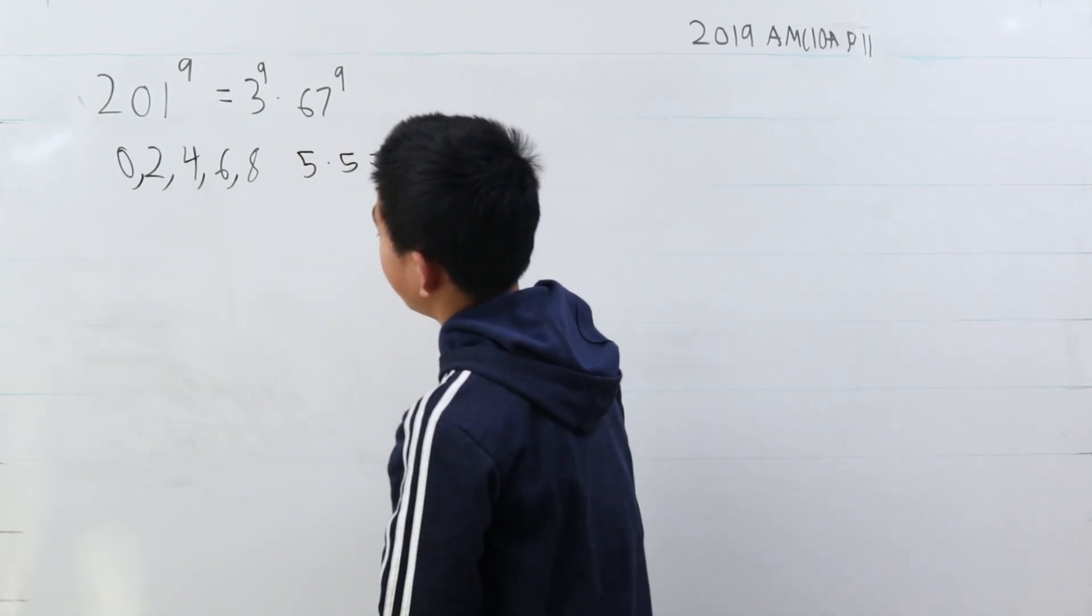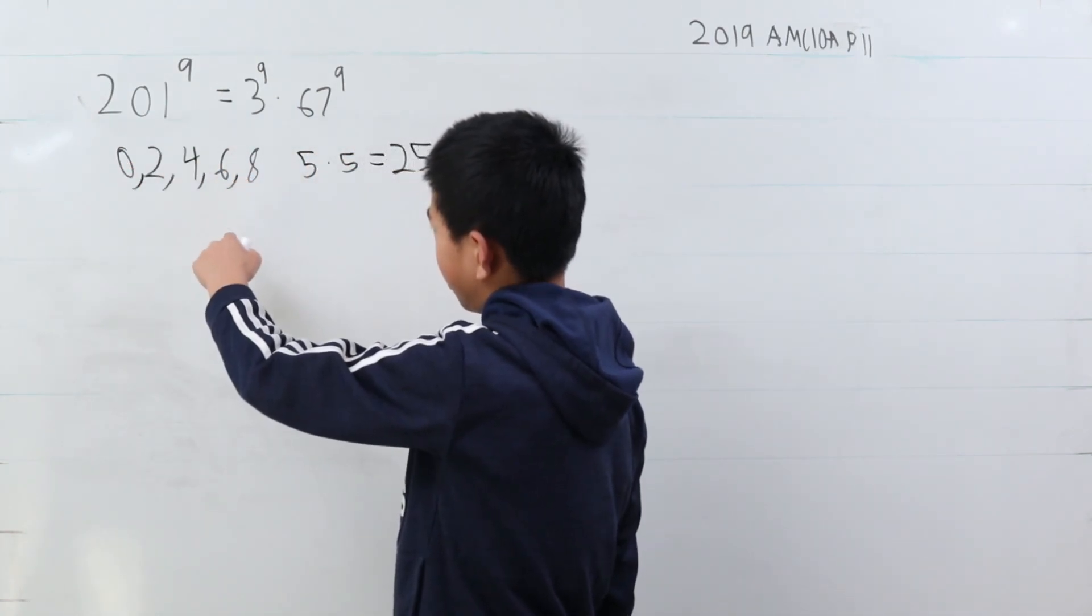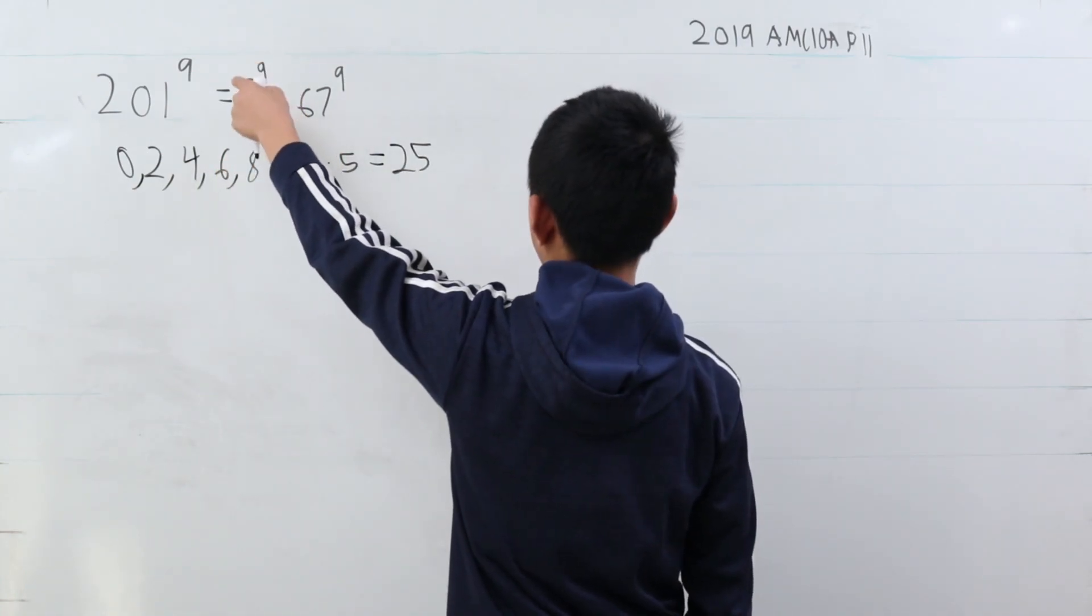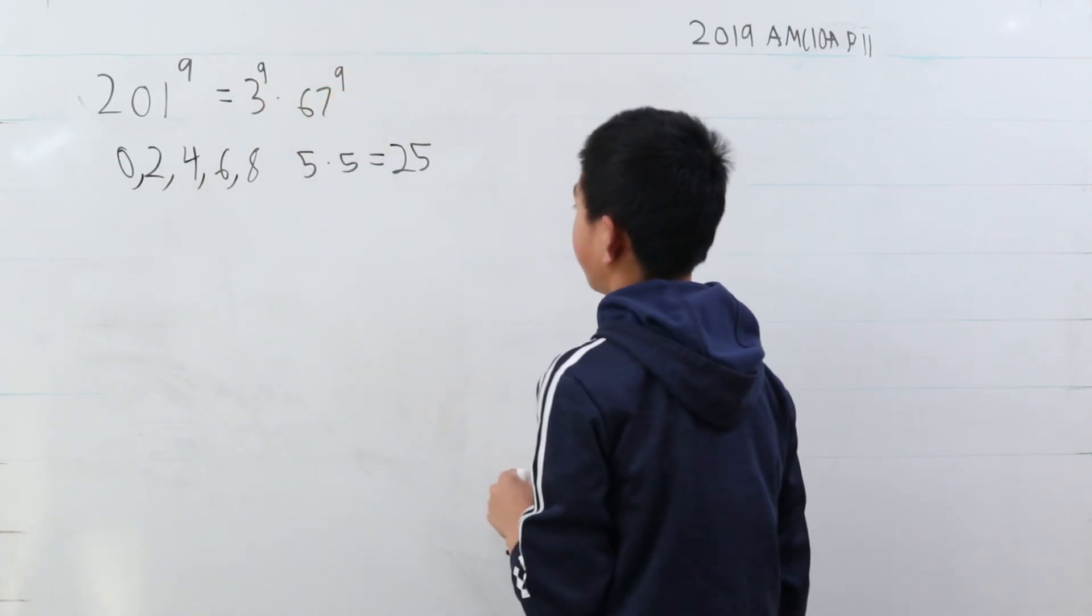And we multiply 5 and 5 because there's five terms here, and there's two terms here, so we can put 5 possibilities here and 5 there.